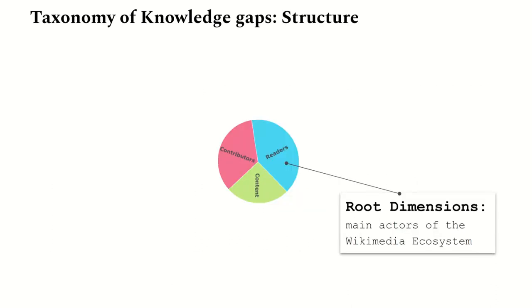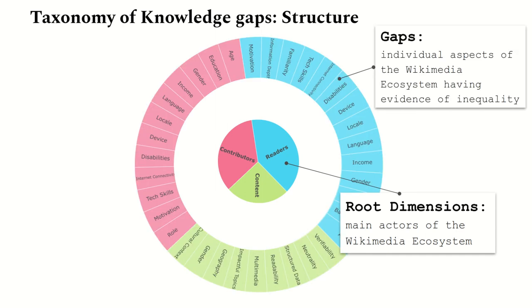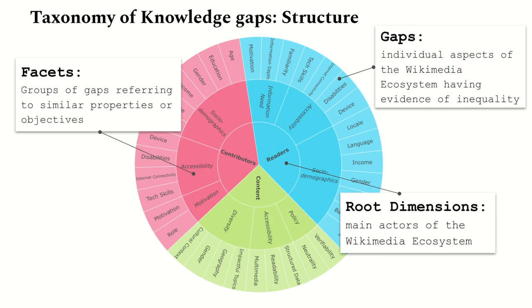The final structure of the taxonomy is as follows. We have three root dimensions: contributors, readers, and content. For each dimension, we identified through literature review a number of gaps. Because the root dimensions are few and the gaps are many, we added a middle layer called phase sets. Phase sets are groups of gaps which refer to similar properties or objectives, sharing similar characteristics, and they're very useful for summarizing the taxonomy and making it shareable in a smooth way.